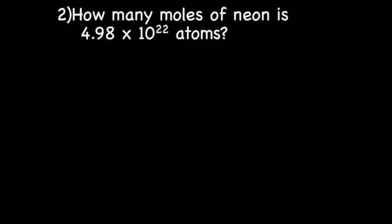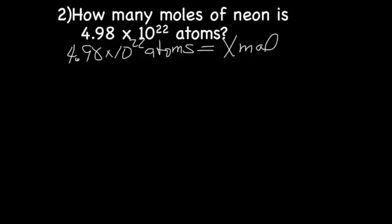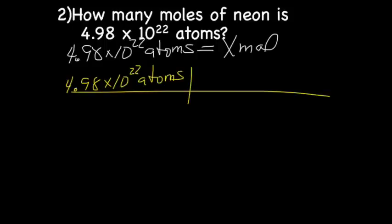All right. Next, we have how many moles of neon is 4.98 times 10 to the 22nd atoms. So we'll start with my math problem, which is 4.98 times 10 to the 22nd atoms is what I know, and I'm trying to find the number of moles. So next, I'll write my grid and put my known in, 4.98 times 10 to the 22nd atoms over 1.